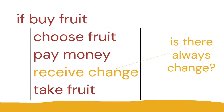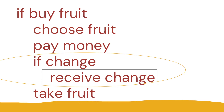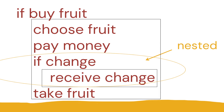But receive change — is there always change? Well, not always. So we can change that: if change, receive change. We now have a nested if statement inside our main 'if buy fruit' statement. Receive change is in the block of code underneath 'if change' — so that's nested. And we can see all of that code is a block of code under the 'if buy fruit' statement.